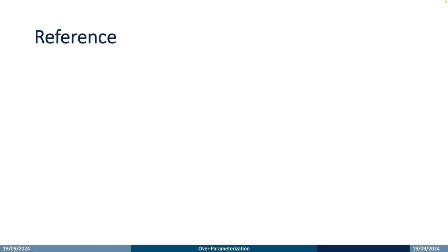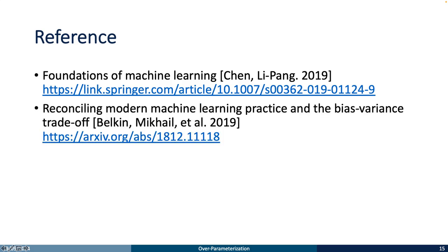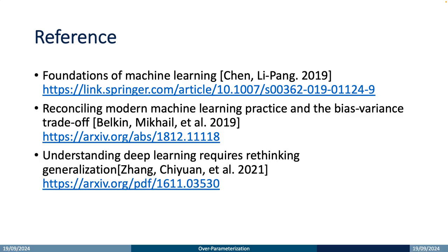Here are some suggested readings. The first is a textbook introducing the theoretical foundations of traditional machine learning — if you are interested in deriving the VC dimension and VC bound, please refer to this book. The second is a paper explaining the double descent curve in testing error. The third is a paper discussing how data distribution affects testing error in deep learning, emphasizing the importance of good data distribution for training deep learning models.